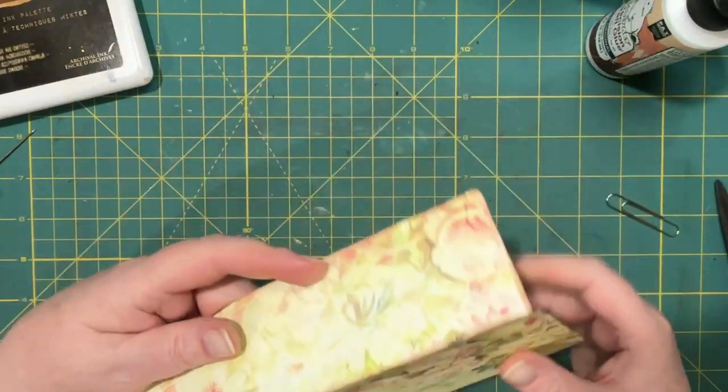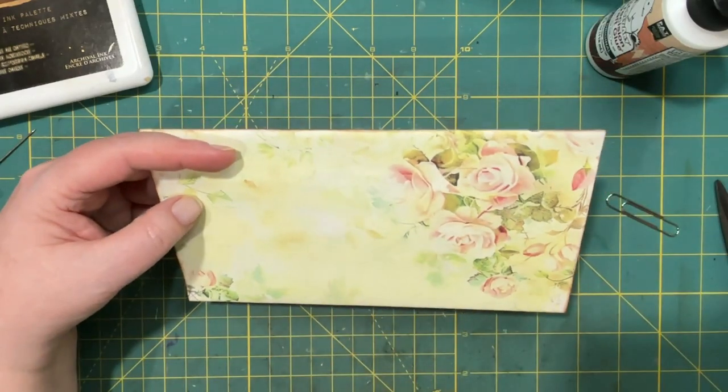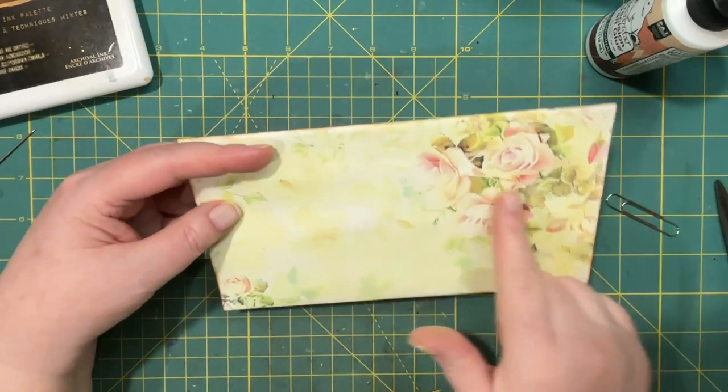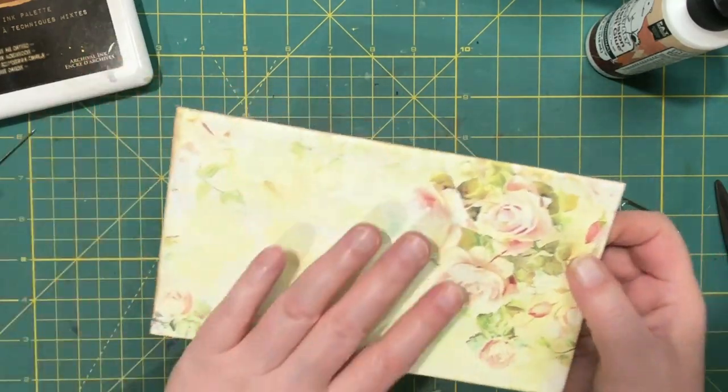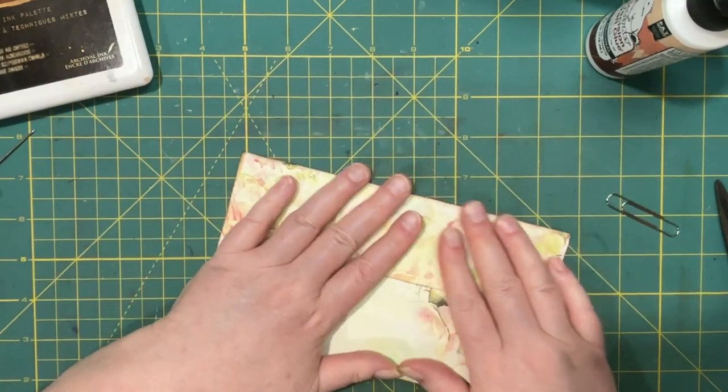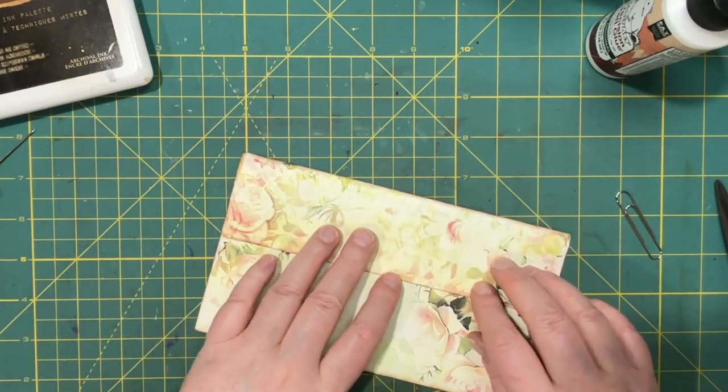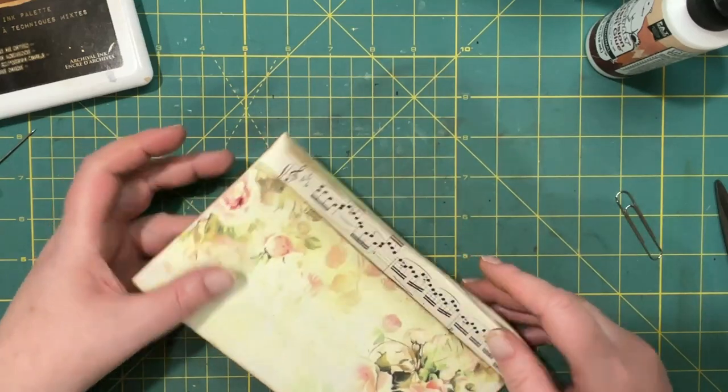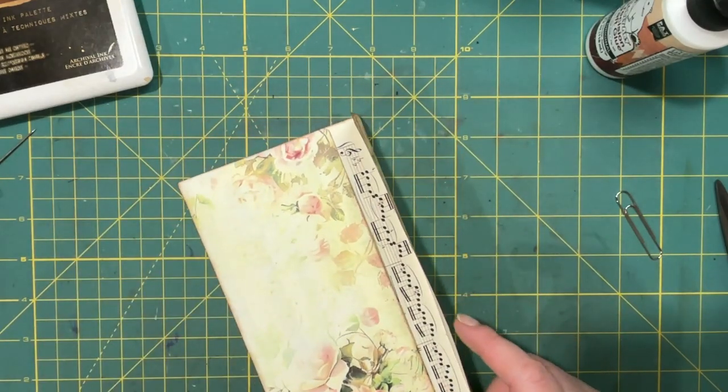If I want to include any extras with the journal, like happy mail, I will do that. Speaking of happy mail, if you don't mind paying the extra postage, you could put a label on here and this would make a really nice envelope for happy mail too.